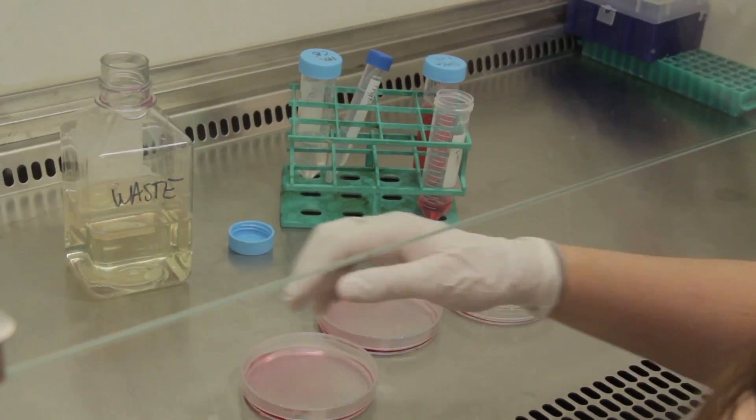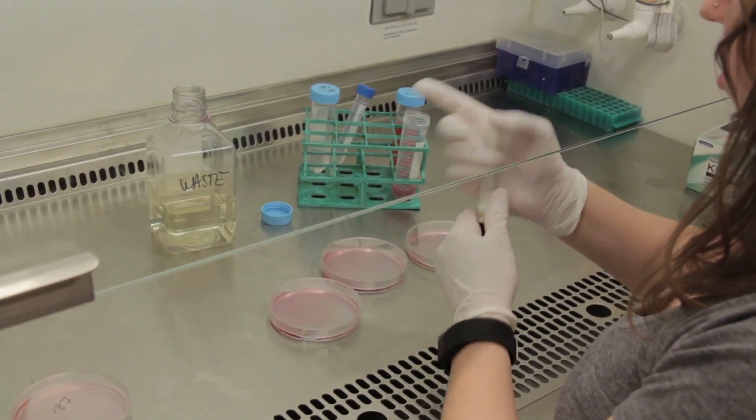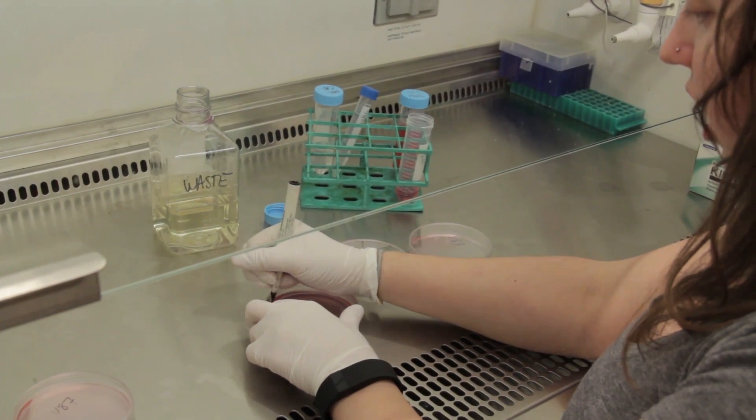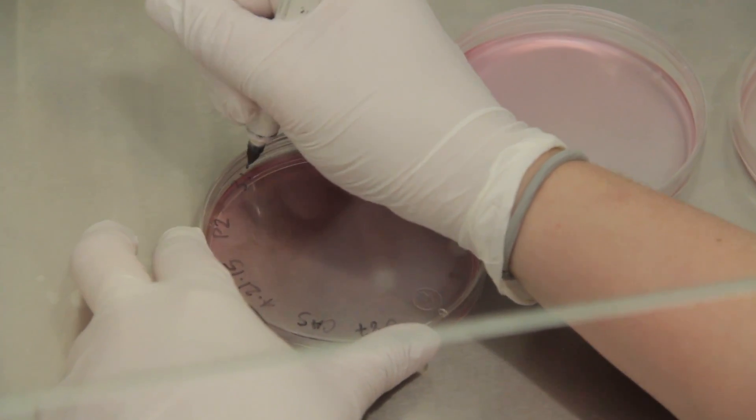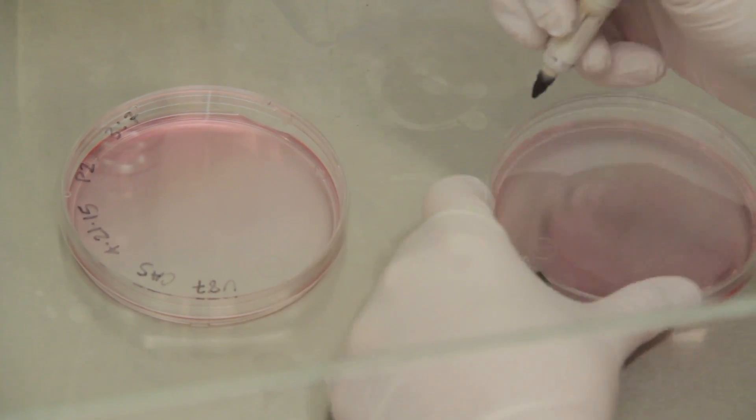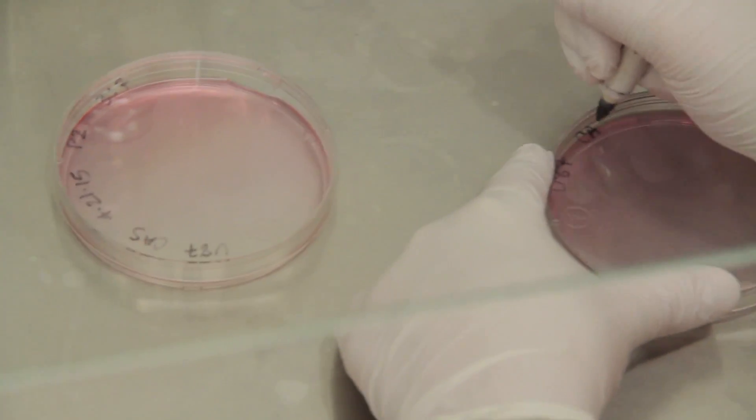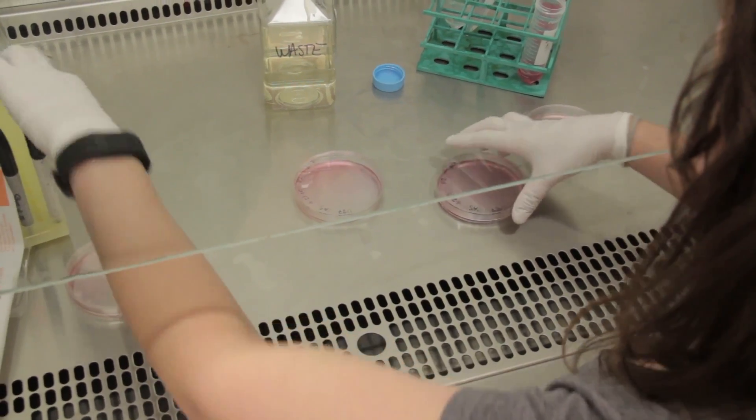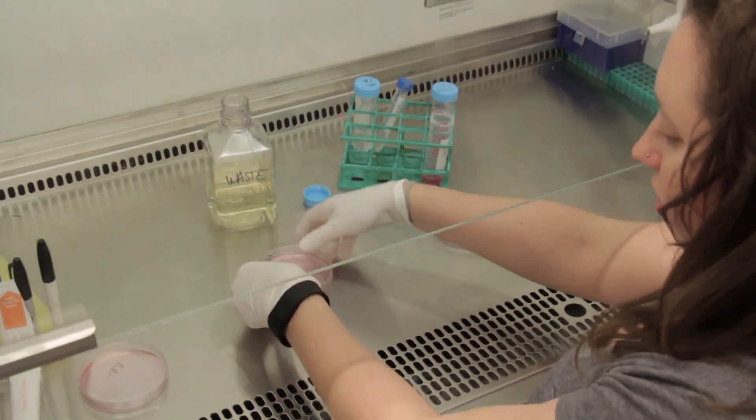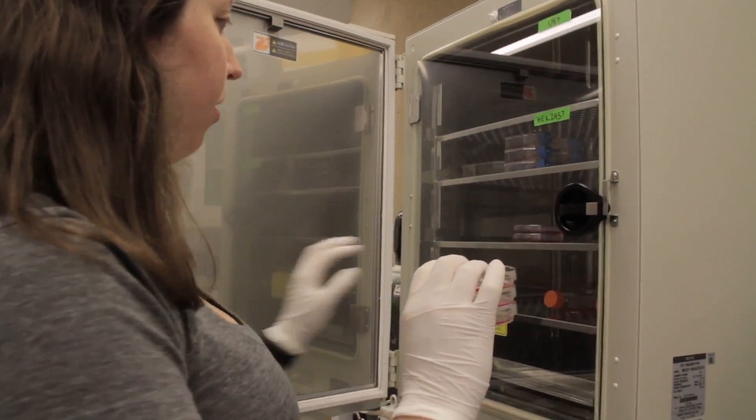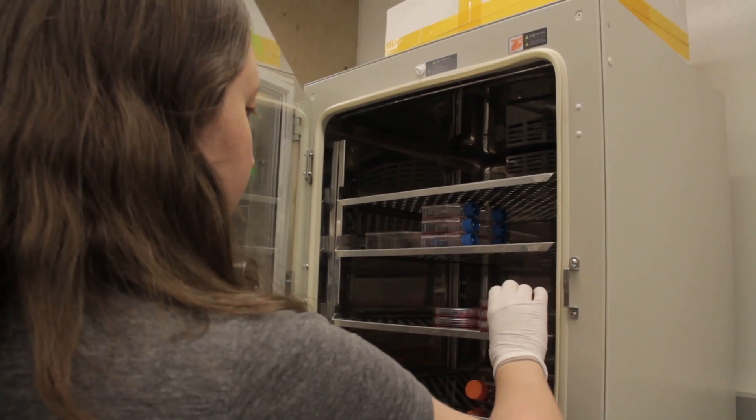What I'll do is label it with the cell type and the dilution that I split them at, and then stick them back in the incubator. The incubator keeps them warm and maintains their pH at a normal level.